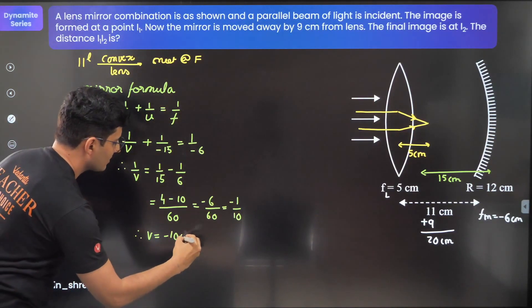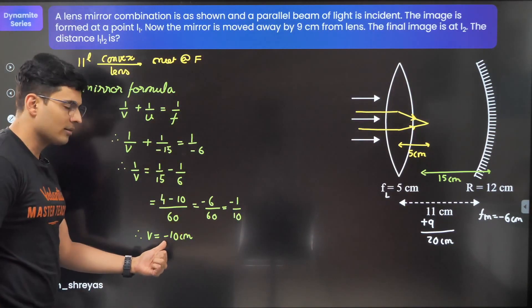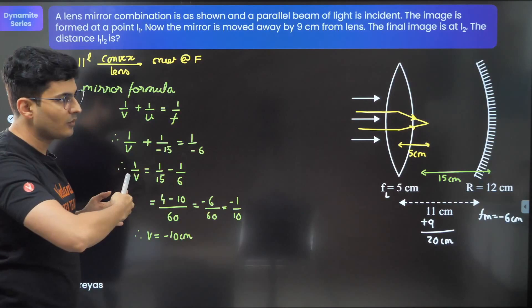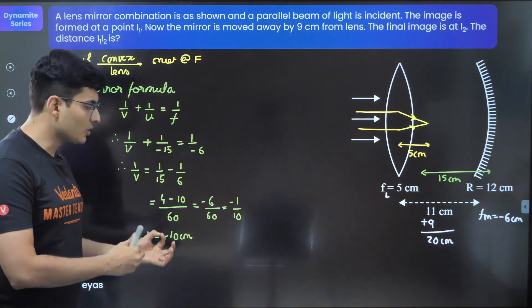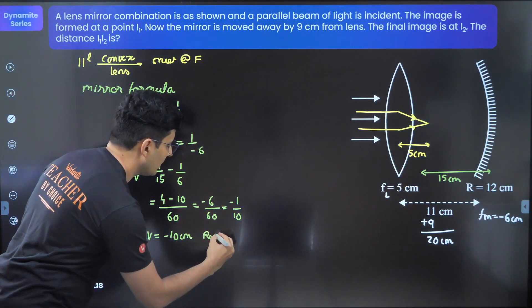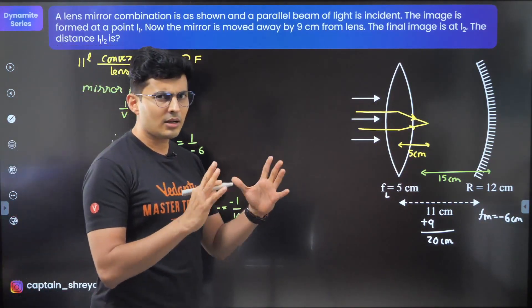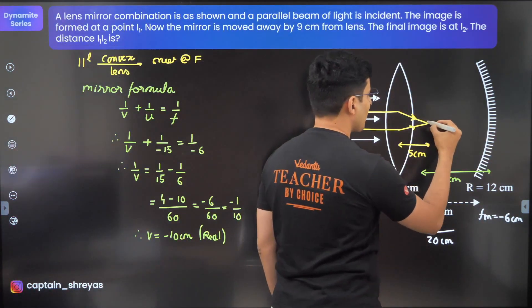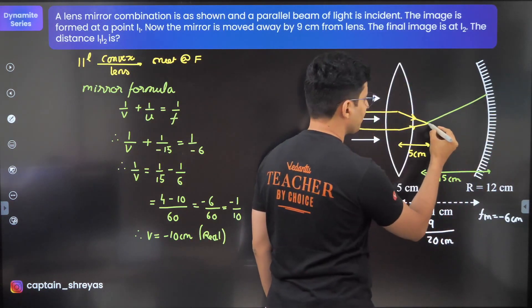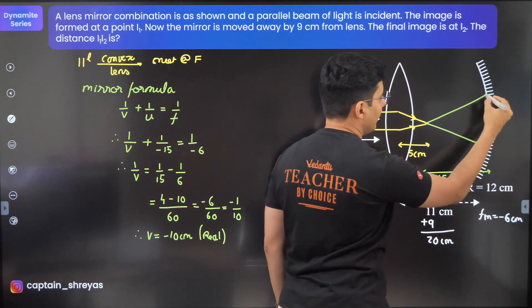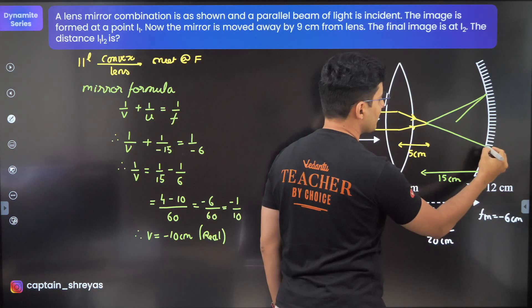Therefore v equals minus 10 centimeters. Interesting! Negative means it's still being formed on this side, and the image is going to be a real image. It should be like this: after reflection it meets maybe somewhere over here. The rays reflect and meet right here.